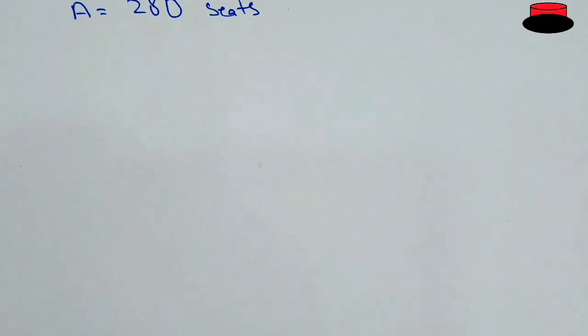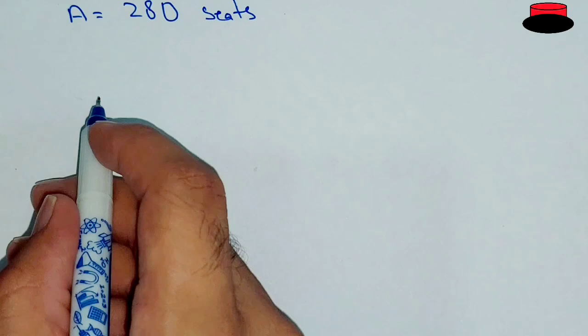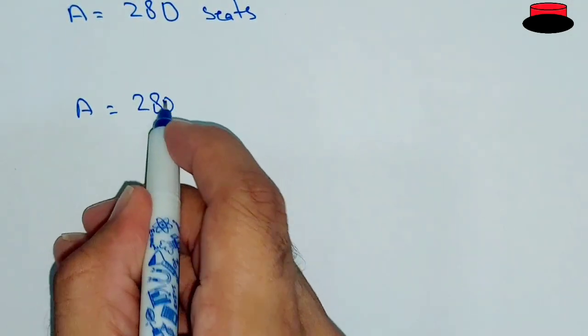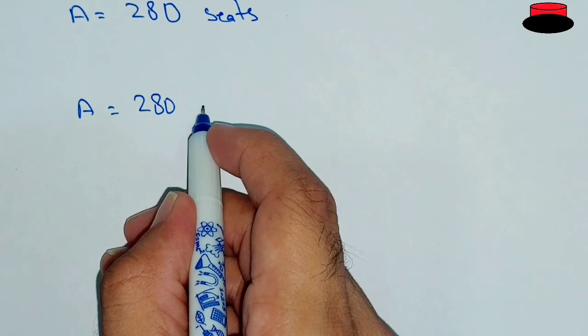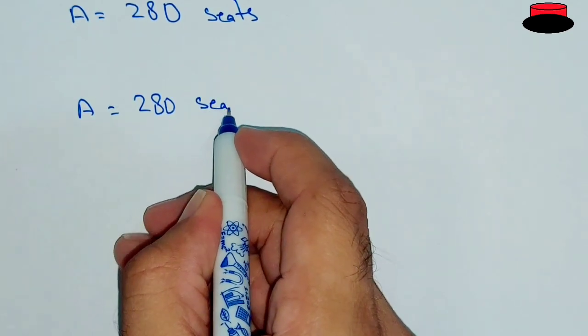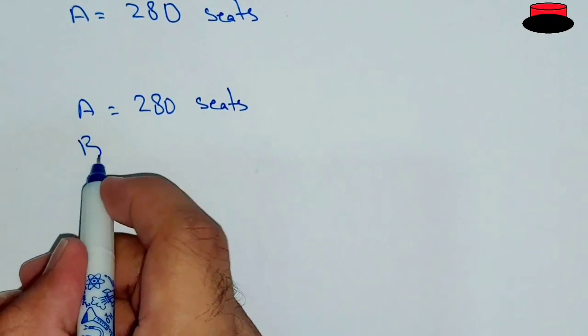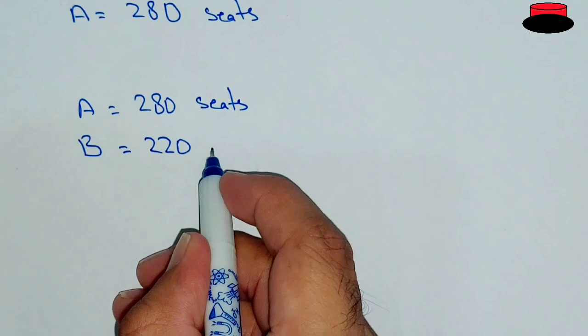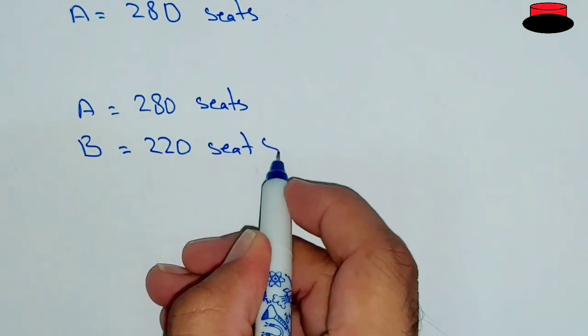So since in the question it is asked how many seats in Plane A and in Plane B, A is equal to 280 seats and B equal to 220 seats. So this is our answer.